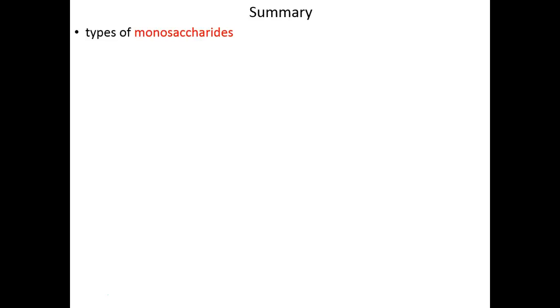To summarize this first chunk of the lecture, we introduced sugars in general to get everyone on the same page. We started with different types of monosaccharides — ketoses and aldoses and what makes them different. Then we established that most sugars are not linear; instead they cyclize, and when they do we have different conformations. If it's a six-membered pyranose ring, we can have chair or boat conformations; if it's a five-membered furanose ring, we can have endo puckering in envelope form. As we move on, we'll talk about the interesting things that sugars can do from a biochemical perspective.